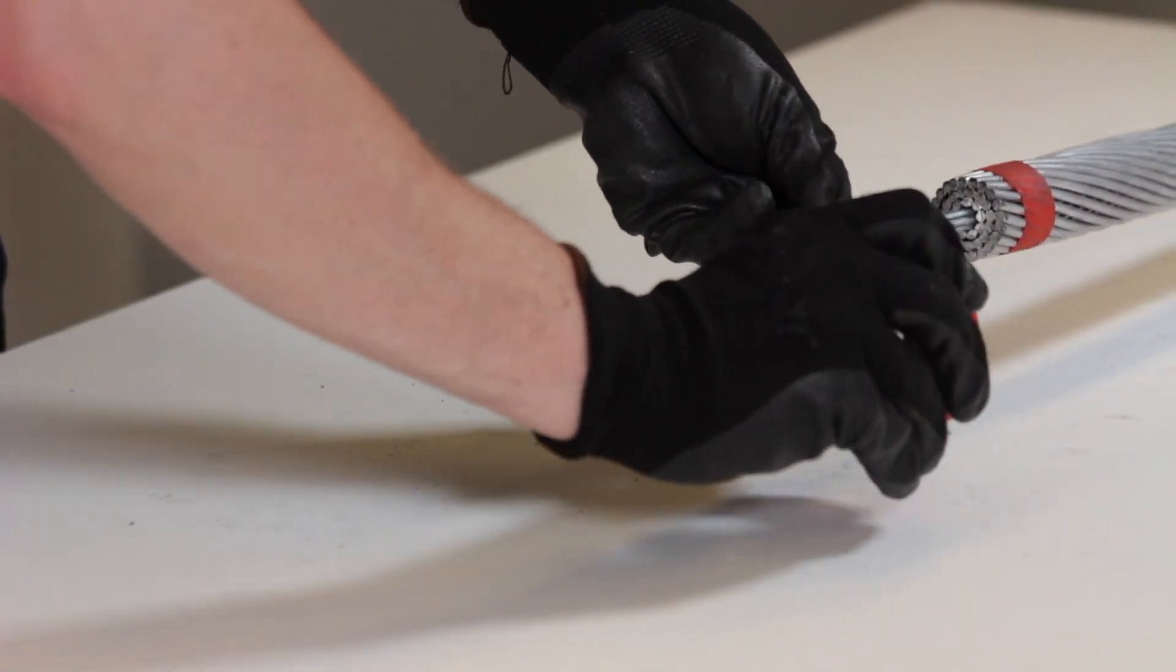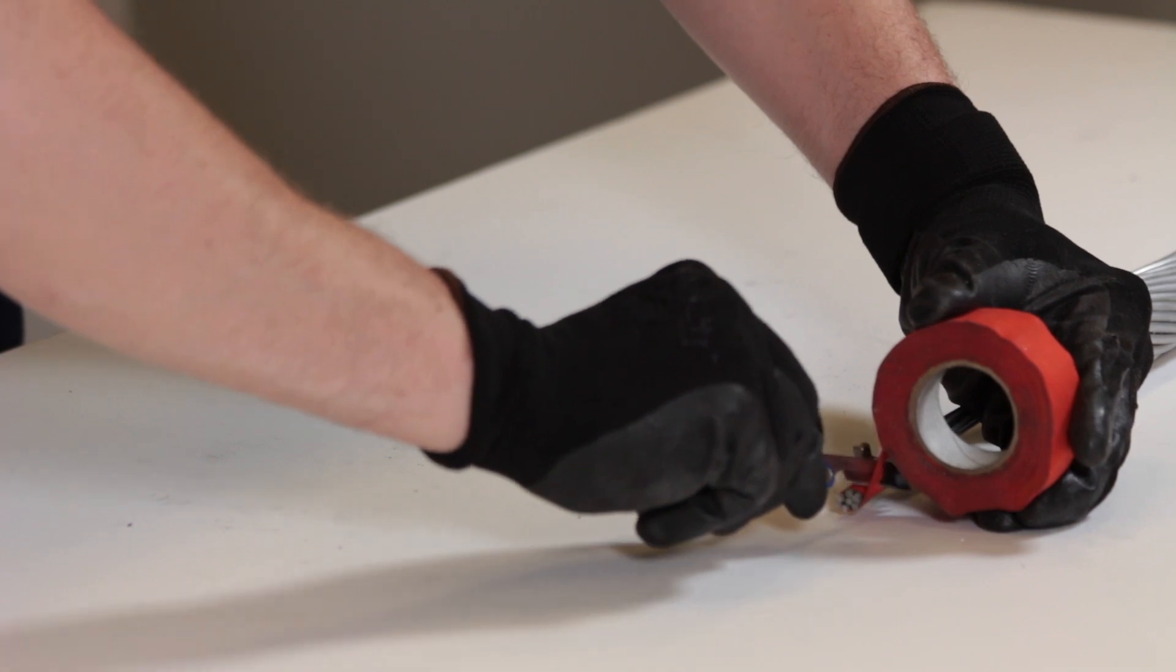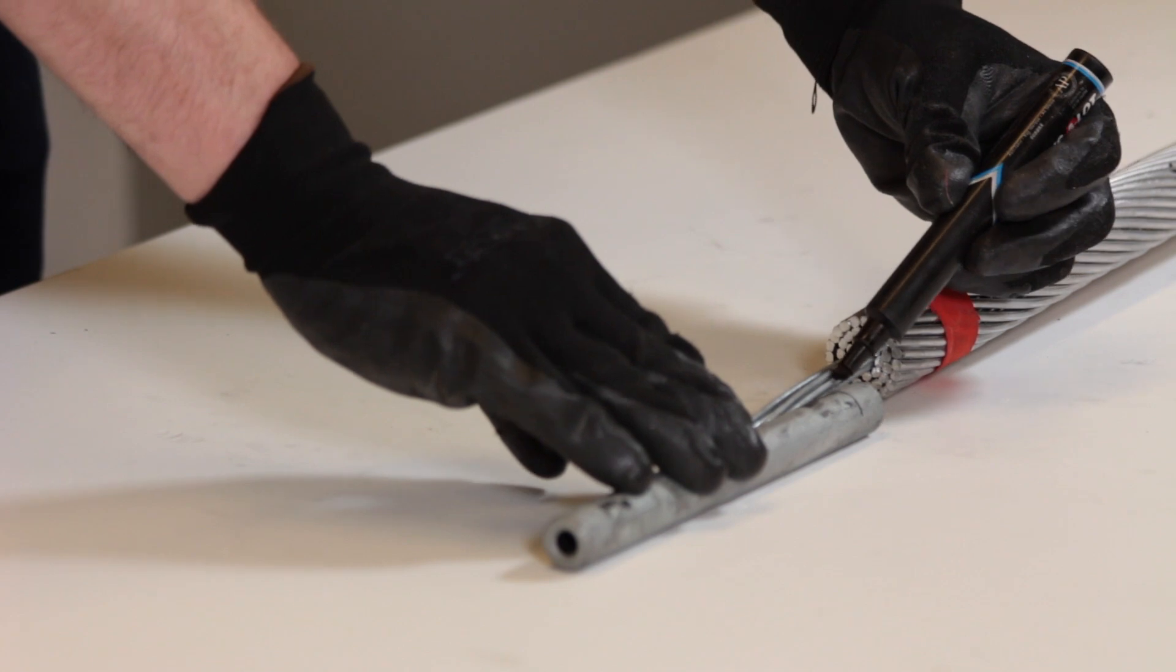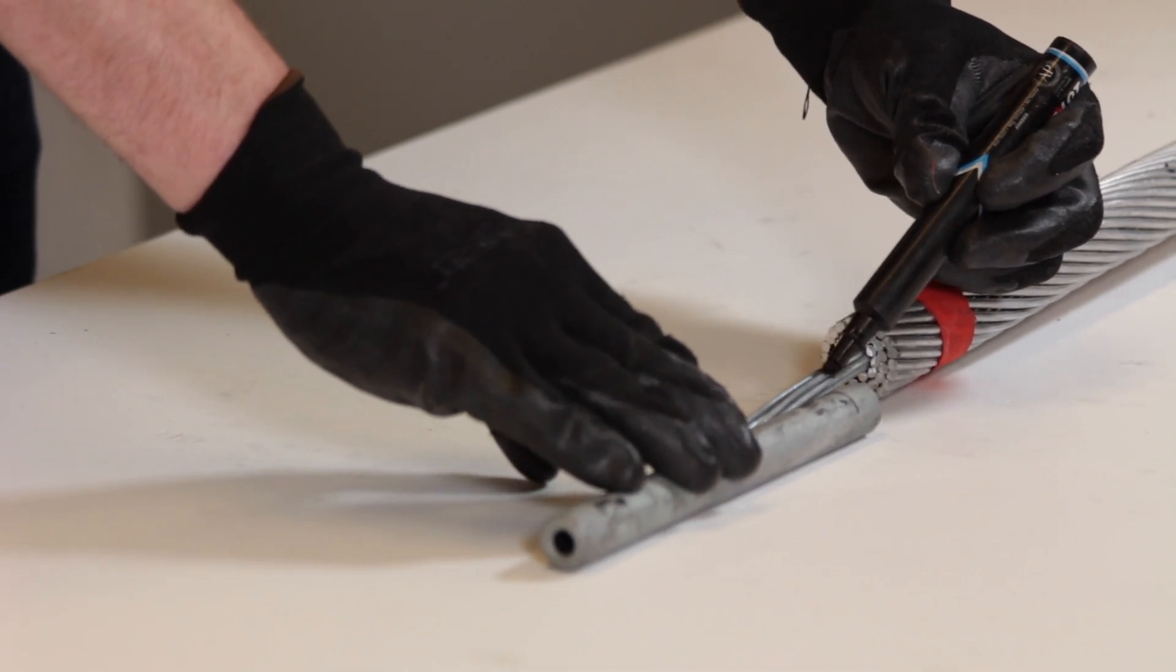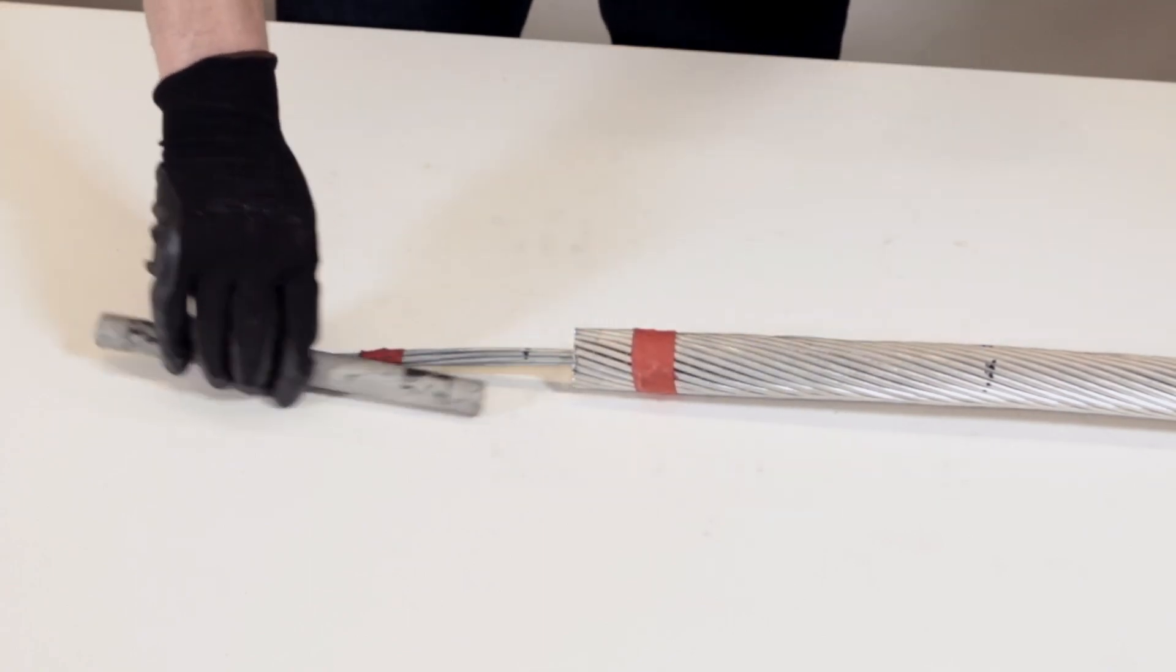Secure the conductor core strands with tape. A hose clamp can also be used to help hold the strands in place while tape is applied. Mark the depth of the steel tube to the center nurl on the conductor core strands. Repeat all preparation and measurement steps for the other conductor to be spliced.